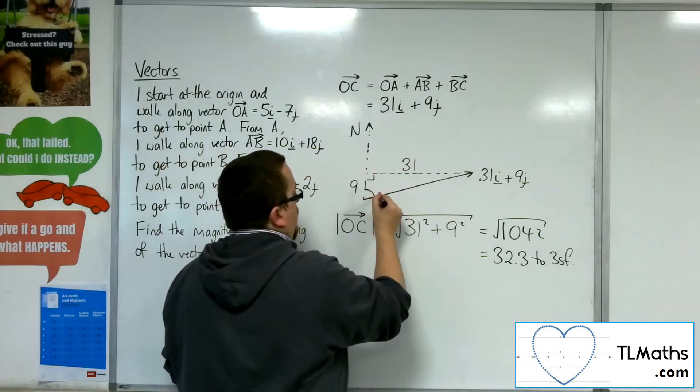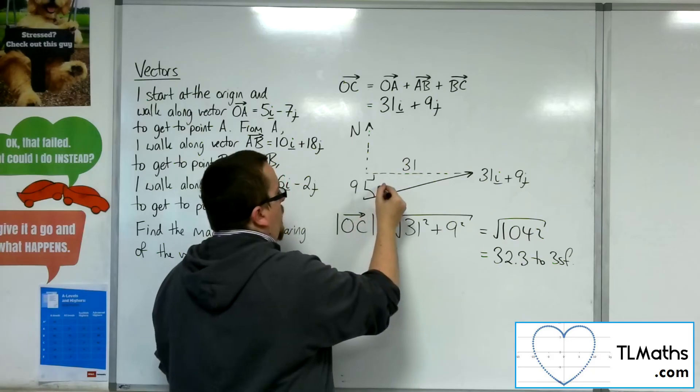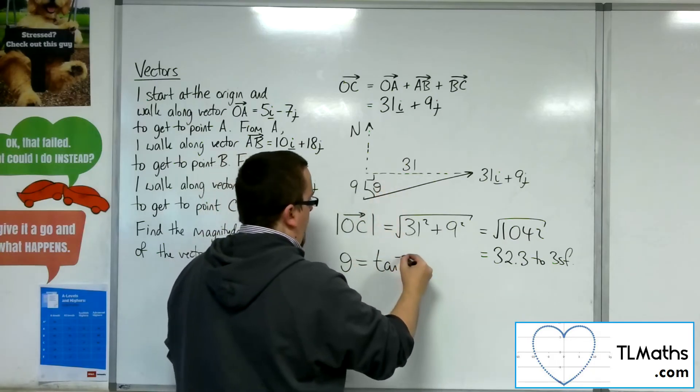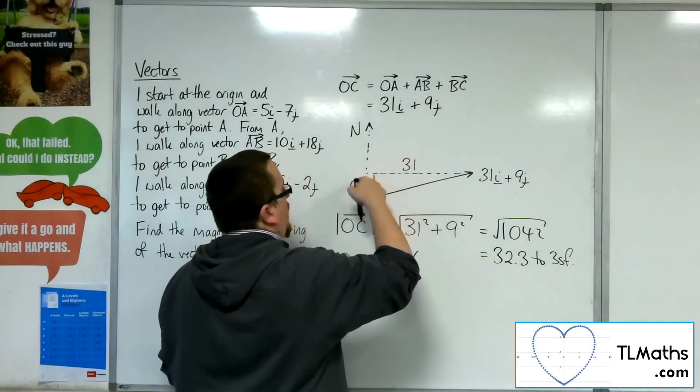Now, the bearing that I have here, I can work out theta, so theta is the inverse tan of the opposite over the adjacent.